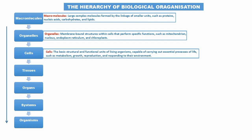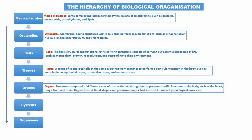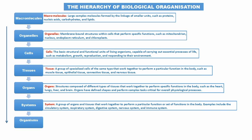Next are organelles — membrane-bound structures that perform specific functions in cells, like the nucleus and mitochondria. Then cells, which are the structural and functional units of living organisms, capable of carrying out essential processes of life such as metabolism, growth, reproduction, and responding to their environment.